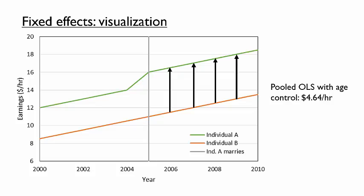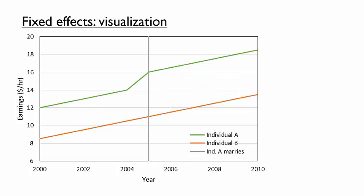But do we really believe that this difference is attributable to the effect of marriage, or is there still some other control we are missing — that is, some other difference between the two individuals? We might note that the earnings of both individuals appear to be increasing at a similar rate through 2004, and if this pattern continued, we might see individual A have earnings like this. We might think of this as the individual A counterfactual — that is, how would the earnings of individual A evolve if they follow the same pattern of increase over time, but also took into account that individual A starts with significantly higher earnings than individual B, perhaps due to a difference in ability or education?